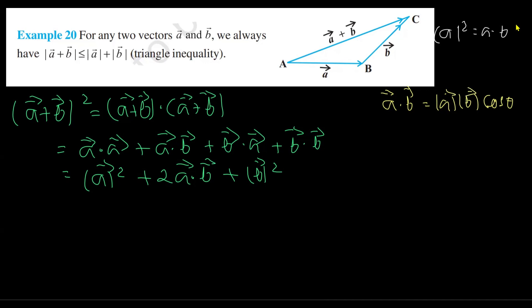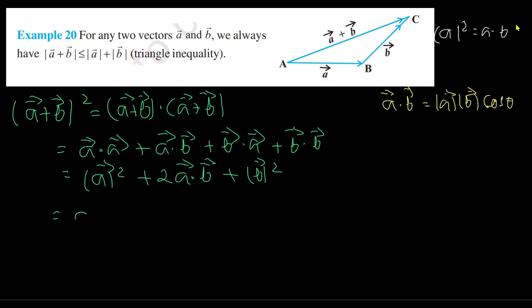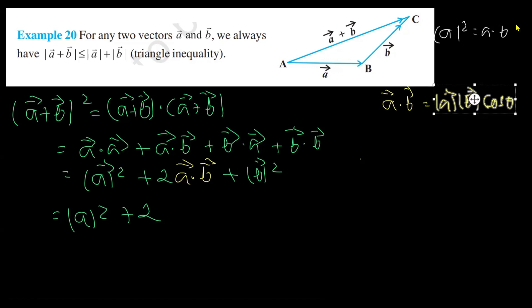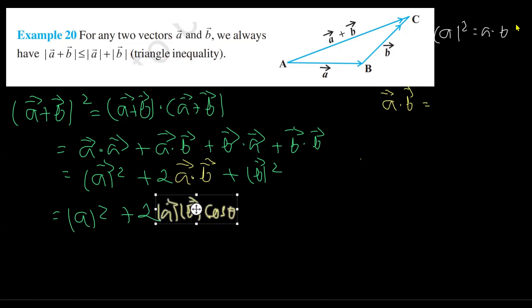Now I'll replace a · b with this expression. So we are getting |a|² plus 2 times a · b — replacing a · b with |a| |b| cosθ — plus |b|².